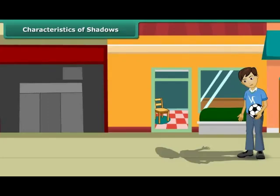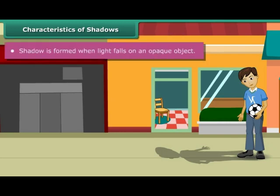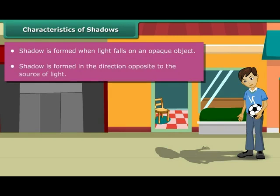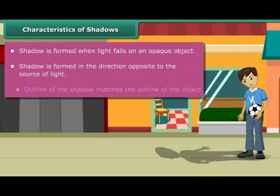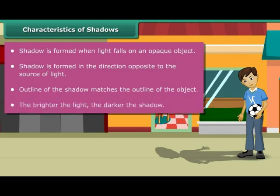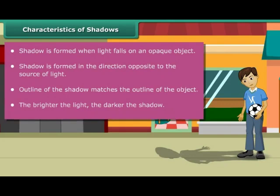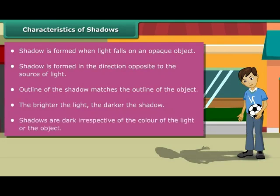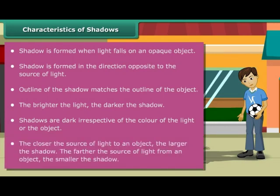Let us list the important characteristics of shadows. Shadow is formed when light falls on an opaque object. Shadow is formed in the direction opposite to the source of light. The outline of the shadow matches the outline of the object. The brighter the light, the darker the shadow. Shadows are dark irrespective of the color of the light or the object. The closer the source of light to an object, the larger the shadow. The farther the source of light from an object, the smaller the shadow.